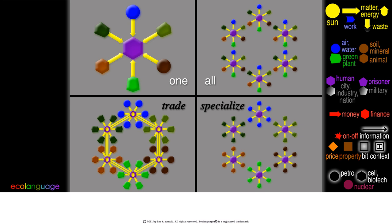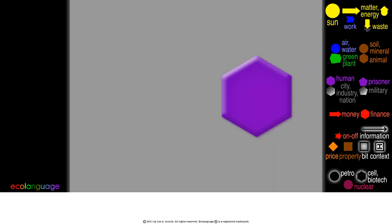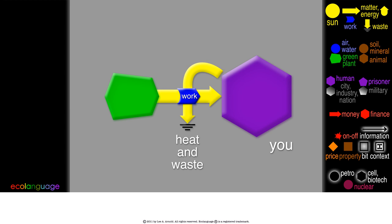We are building with a flowchart language to illustrate general principles. So let's start by saying that this stands for you, and we will show work as your energy flowing through any work process. It is finally lost as heat and waste, but you get something in return. You have gathered a green plant.